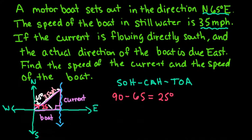So we have a 25 degree relationship here. The current would be the opposite, the boat would be the adjacent, and we're given the hypotenuse. So we're going to use these two, sine and cosine, to help us find our missing information.